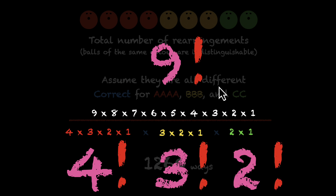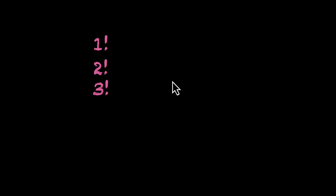Now because they're so common in our calculations, let's try figuring out the values for some of them. Let's find the values of the first 7 factorials — 1, 2, 3, 4, 5, 6, and 7 factorial. Pause the video; this will be good practice. Try finding the values of all 7 factorials.